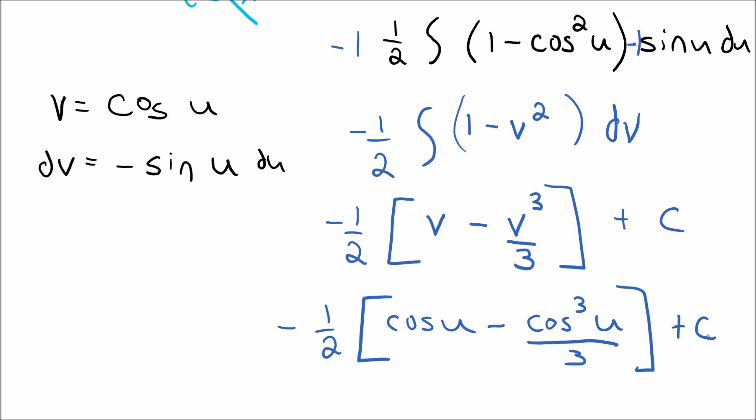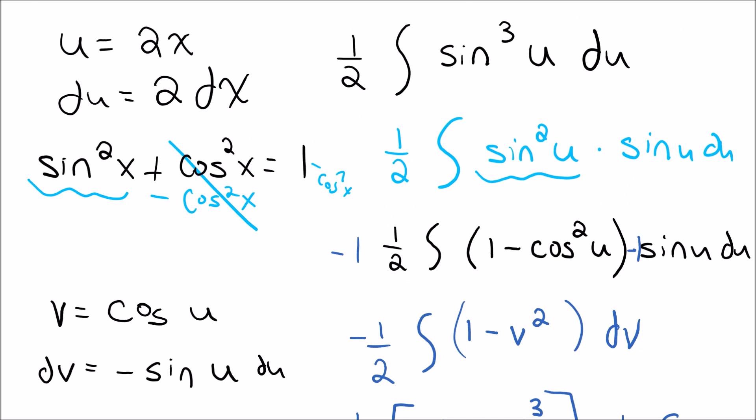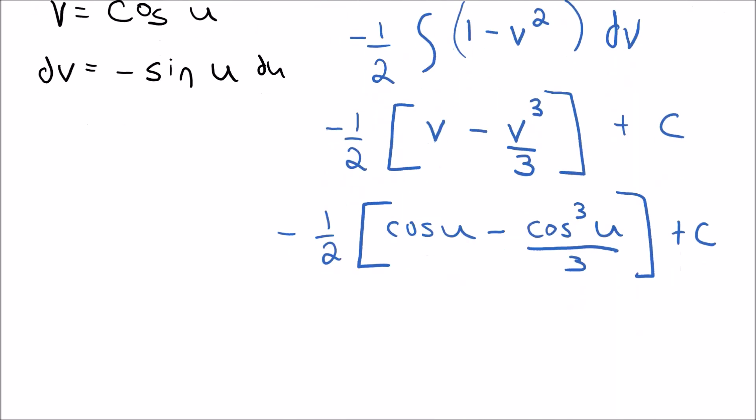And now we just say what we got before for the u, we said u was 2x. So I'm going to substitute back in 2x for u. So we get negative 1 half cosine 2x minus cosine cubed of 2x over 3. And then the plus c down here.